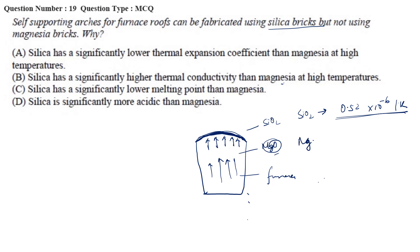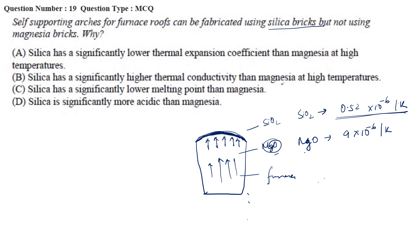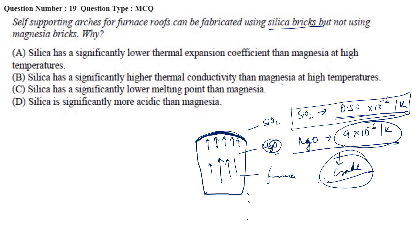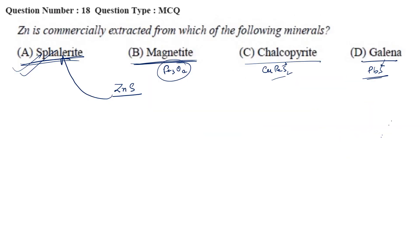Magnesia has a coefficient of thermal expansion of 9×10⁻⁶ per Kelvin. So SiO2 has a lower coefficient of thermal expansion — it is not going to expand much, and while cooling it is not going to contract much. That means silica bricks at the top will not form any cracks. But if you use magnesia, because of its high thermal expansion coefficient it will crack. So option A is the correct answer.